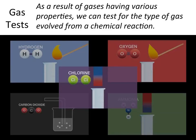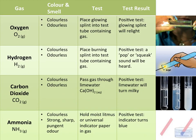Some reactions may release a type of gas, and there are different tests we can use to identify what gas it is, because these gases have different properties. Here are the different properties. You can see that the first three are very interesting because they're all very similar in terms of physical properties — they're colorless and odorless. So how do we know which ones are which?